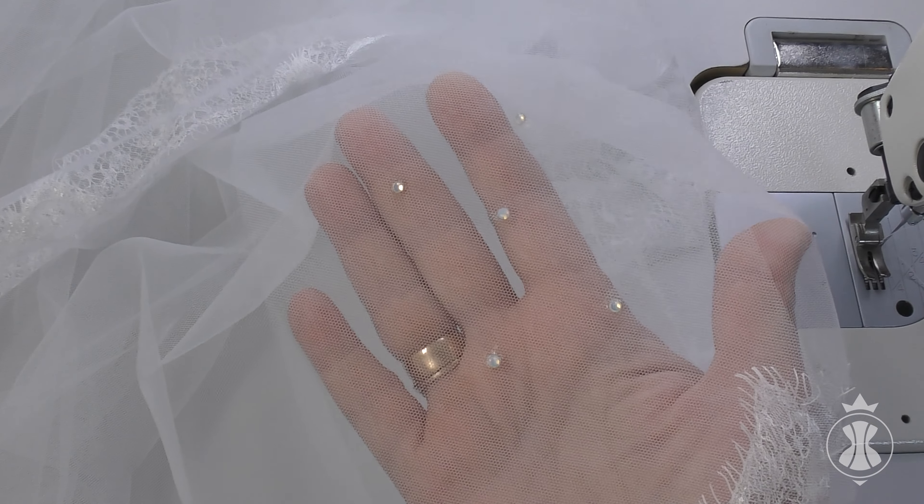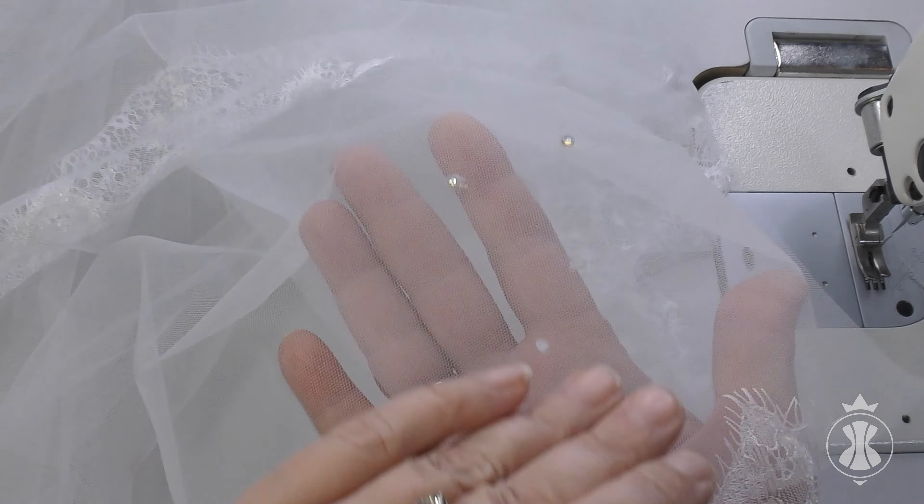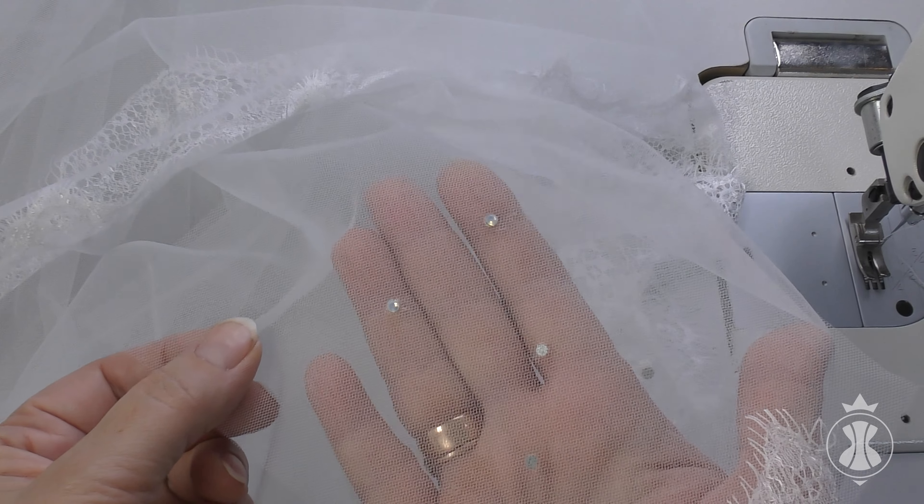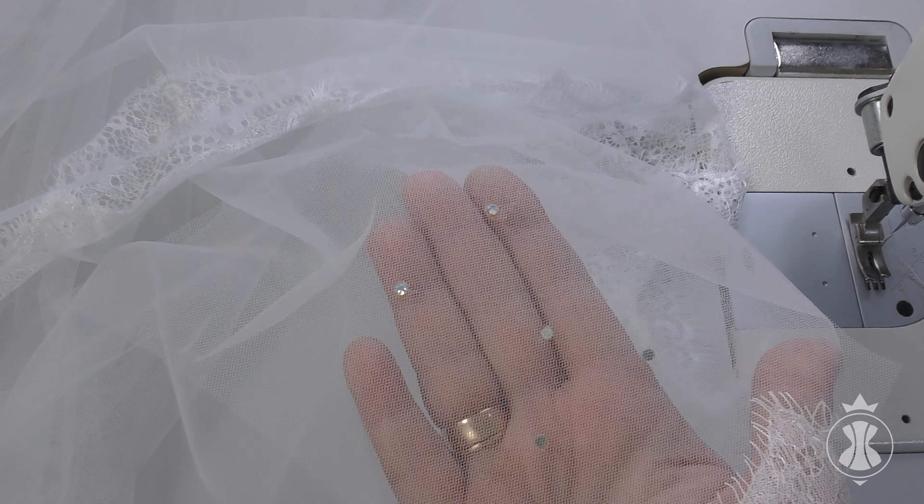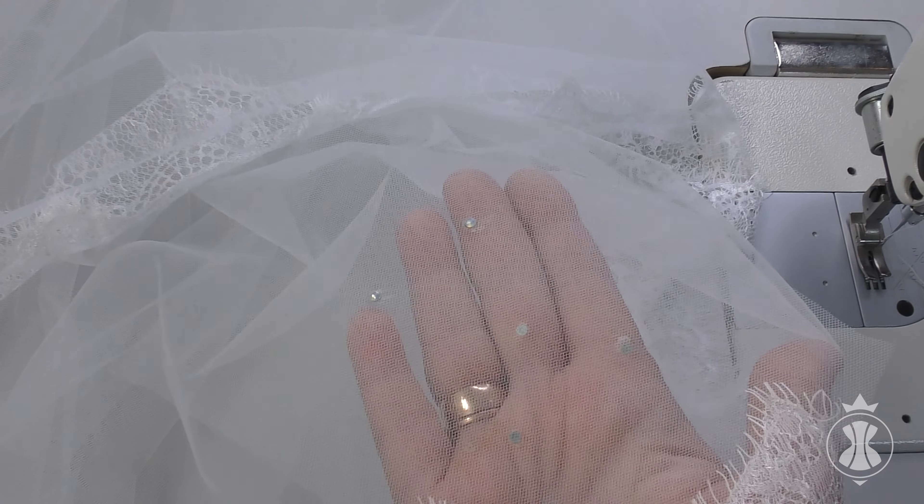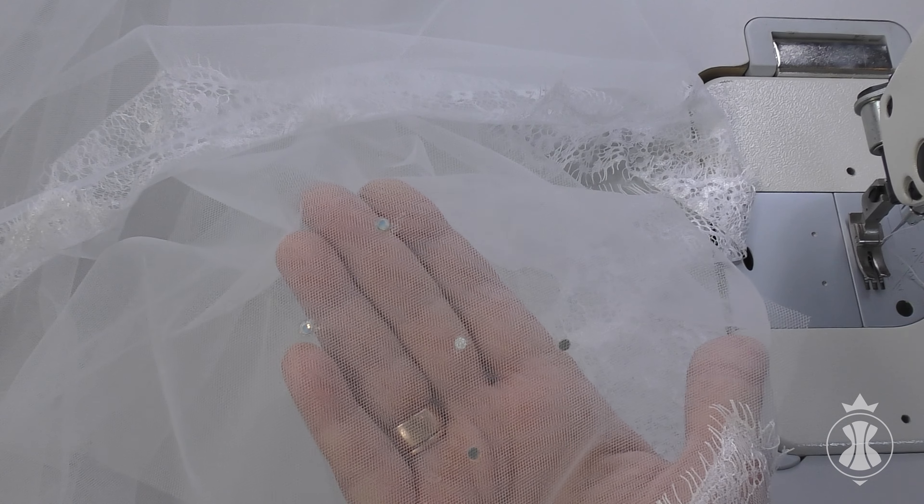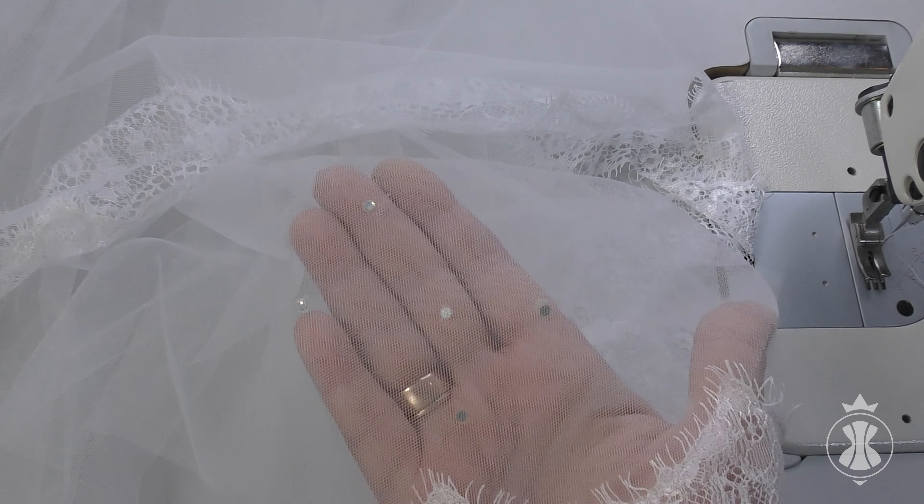If you plan to scatter rhinestones across the fabric of the veil, duplicate them on both sides of the front short layer on the veil by sticking them through the fabric. Otherwise, during the ceremony when the layer is thrown over the face, rhinestones attached on one side will look like black spots.